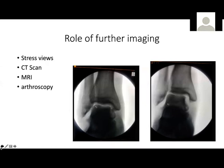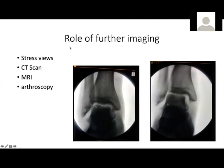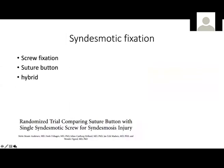Fixing the posterior malleolus is mainly of prognostic value. Post-operative CT scan — though some consider it an unnecessary resource — does show whether whatever modality was used actually worked in reducing the syndesmosis, and that has an effect on long-term prognosis. The posterior inferior fibular ligament confers significant strength to the syndesmosis — some texts cite up to 70% of syndesmotic strength coming from that ligament. Fixing the posterior malleolus also restores congruence of the incisura, which helps correct the anatomy of the syndesmosis.